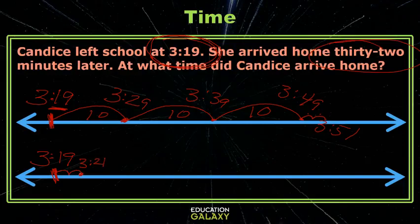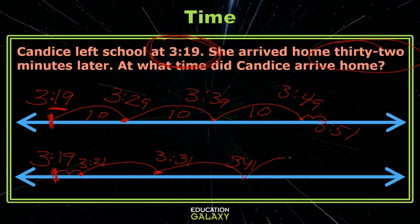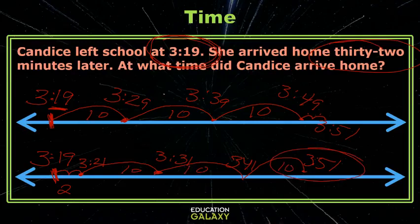Now I've used those 2 minutes, I have 30 left. Let's do our 10s. Hop 10 — that's 3:31. Hop 10 — that's 3:41. Hop 10 — it's 3:51. So now I've used my 2 right here, and then I've hopped 10, 20, 30, again landing at 3:51.